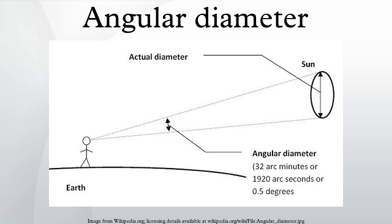The angular diameter can alternately be described as the angle an eye or camera must rotate to look from one side of an apparent circle to the opposite side.